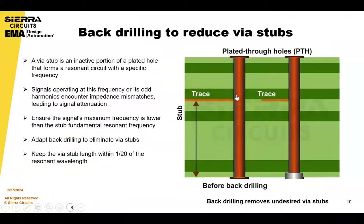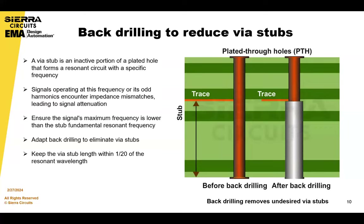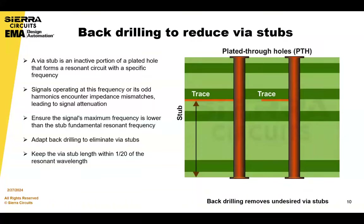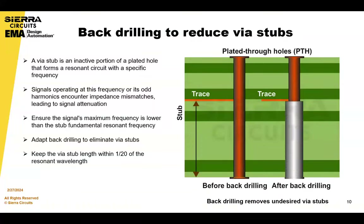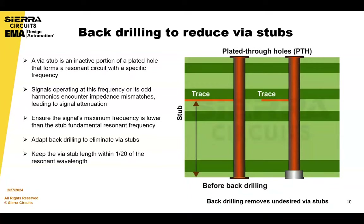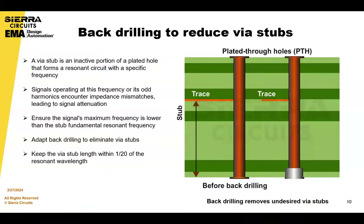Back drilling is a technique that can reduce your VIA stubs. A VIA stub is basically an inactive portion of a VIA that forms a resonant circuit with a specific frequency. Signals operating at this frequency or its odd harmonics encounter impedance mismatches, leading to signal attenuation. To prevent signal attenuation caused by VIA stub resonance, ensure the signal's maximum frequency is significantly lower than the stub's resonant frequency. One effective way to eliminate VIA stubs is back drilling.